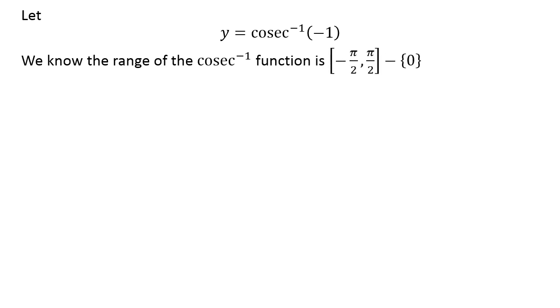Now, we know the range of inverse of cosecant function is the closed interval of minus half of pi and half of pi except 0.